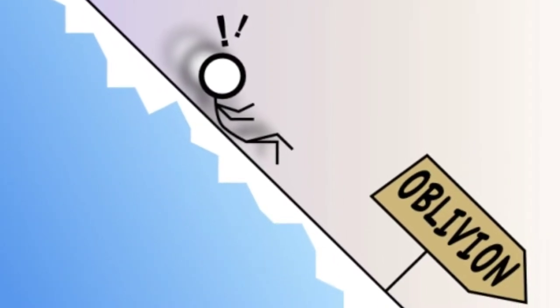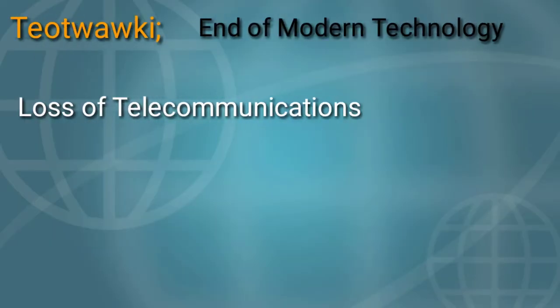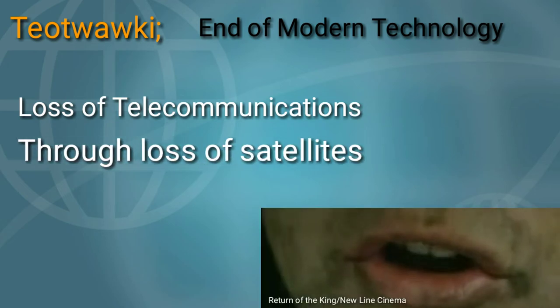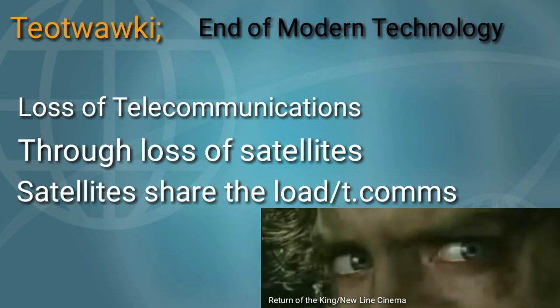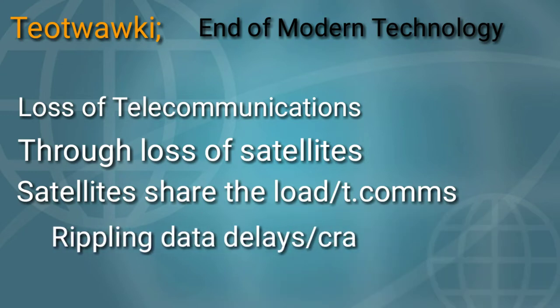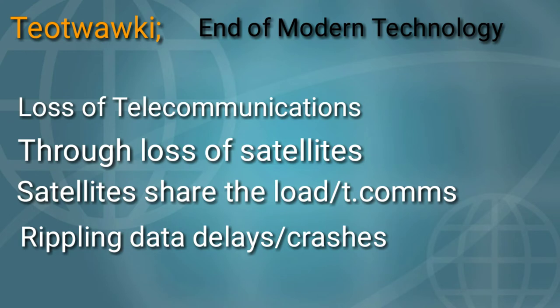This particular situation is one which is caused by the loss of our telecommunications networks through the loss of our satellites. Satellites share the load of the telecommunications network, and without them, we will experience rippling data delays and thereby crashes in other systems, and this will cause failures in commerce, distribution, and civil services, and this could very easily trigger the kind of full systemic collapse that we often discuss in prepping communities.